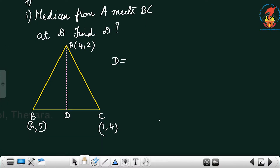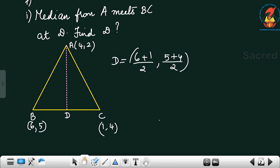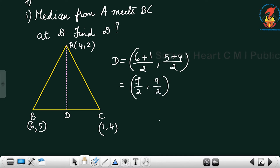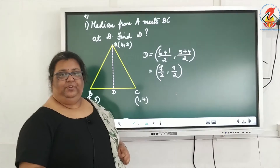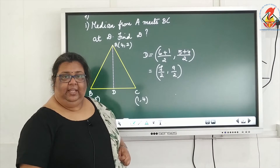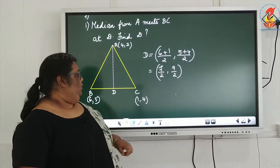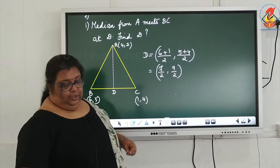So D is equal to (6 plus 1 by 2, 5 plus 4 by 2). That gives us 7 by 2 and 9 by 2. So the coordinate of D is the ordered pair (7/2, 9/2). That is your first subdivision answer.